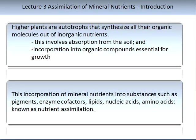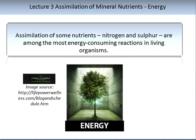Higher plants are autotrophs that synthesise all their organic molecules out of inorganic nutrients. This involves the absorption of nutrients from the soil and incorporation into organic compounds essential for growth, development and yield production. This incorporation of mineral nutrients into substances such as pigments, enzymes, cofactors, lipids, nucleic acids, and amino acids is known as nutrient assimilation. Nutrient assimilation is the conversion of a nutrient into a fluid or solid substance of the plant. The process of some nutrients such as nitrogen and sulphur is amongst the most energy-consuming reactions in living organisms.